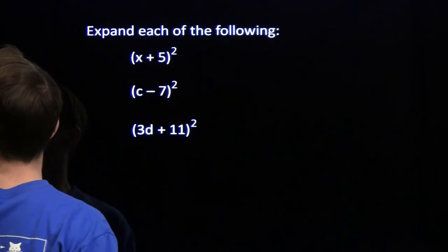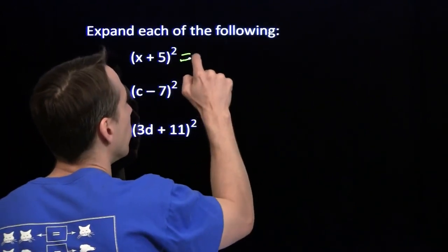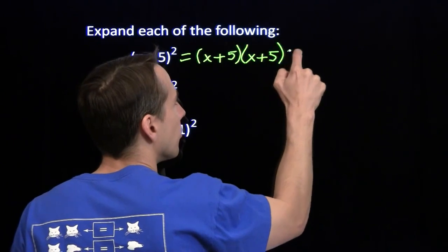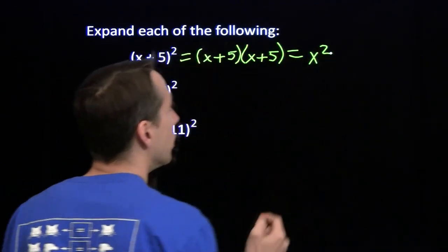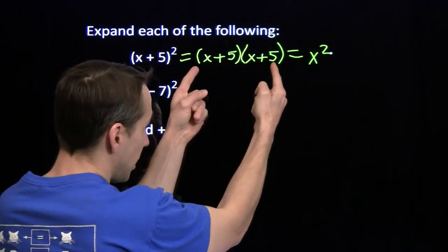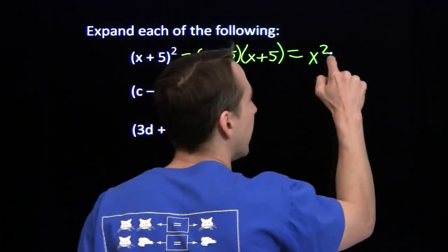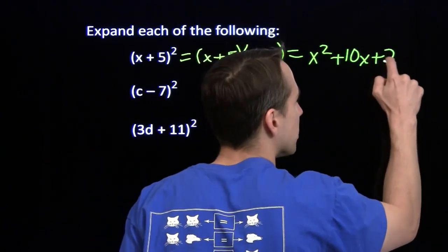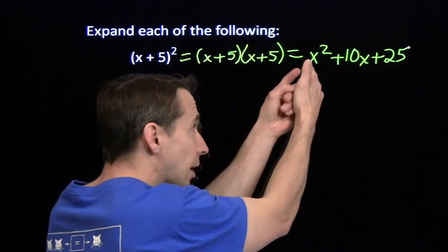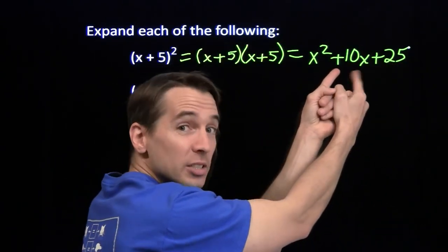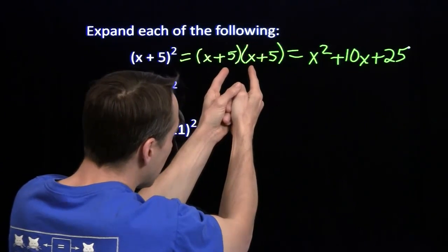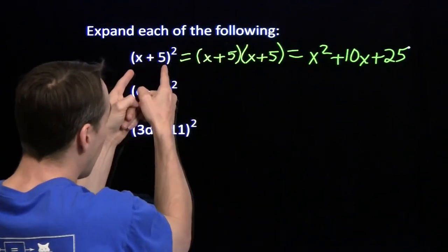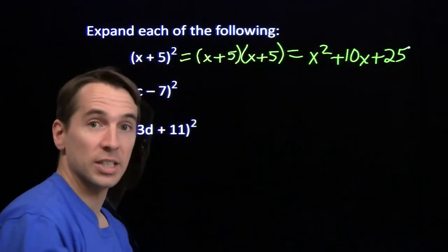Let's figure out what the square of x plus 5 is equivalent to. We'll write this as the product of two binomials. We have x times x giving us x squared, plus 5x, and then x times 5 gives us another plus 5x — two copies of 5x. That gives us plus 10x. Plus 5 times 5 gives us the plus 25. So we have x squared, the 25, but we also have this middle term, 10x, from two copies of the product of these terms.